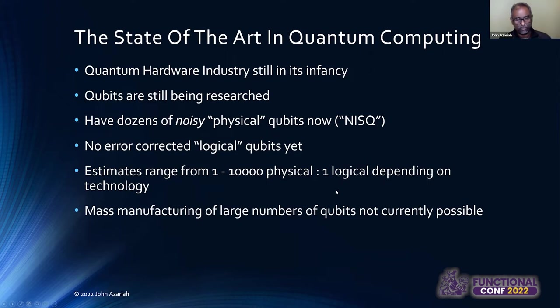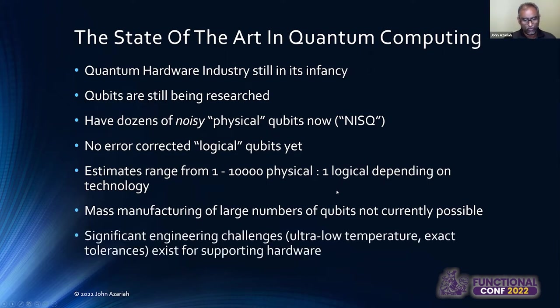So, mass manufacturing is not possible. Engineering-wise, there are a lot of challenges involved because you have to work with really exotic environments like super low temperatures and very, very fine tolerances for the material that you build. So, the engineering challenges involved in actually building out qubits is not at the state of what you might call maturity.